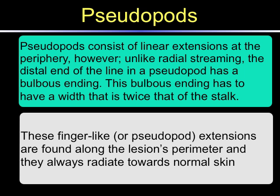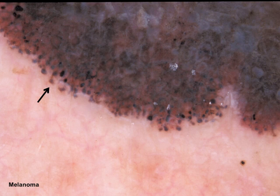As is the case with any streak, these finger-like or pseudopod-like extensions are found along the lesion's perimeter and always radiate towards uninvolved normal skin. Here is an example of a melanoma displaying pseudopods. The arrow points to a linear extension of streak emanating from the tumor, consisting of a stalk with a bulbous ending. Notice that the bulbous ending has a width more than twice that of the linear stalk from which it originates — the characteristic morphology of a pseudopod.